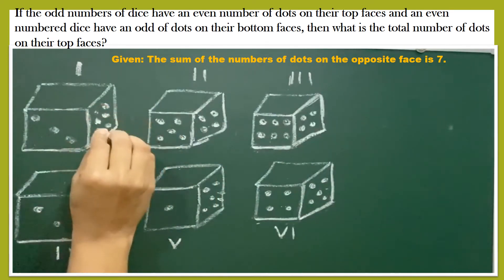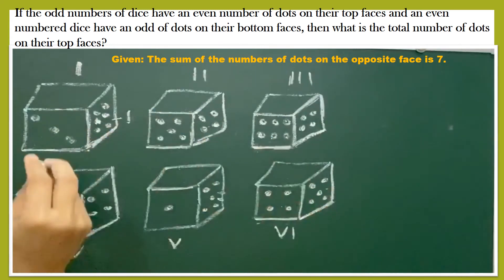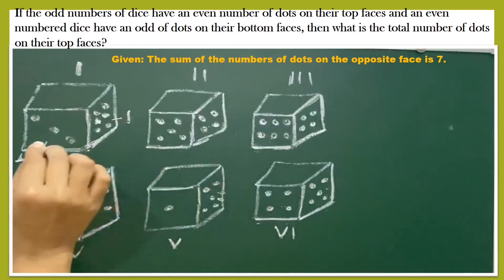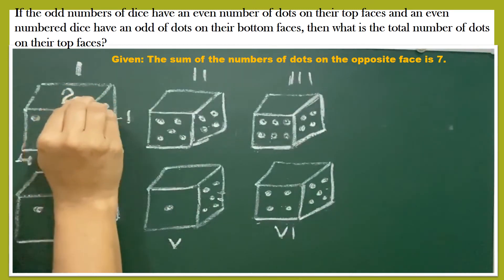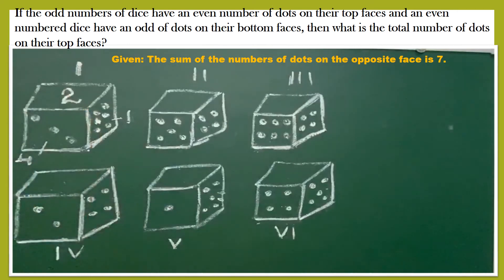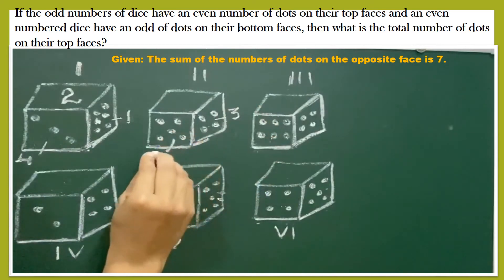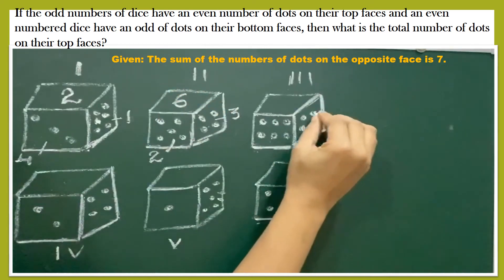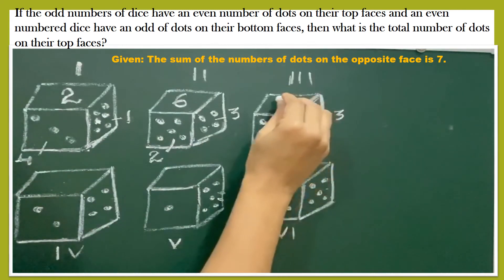For die 1: this face has 6 dots, opposite is 1. And 3, opposite is 4. The remaining numbers are 2 and 5; the even number is 2. So this cube has 2 dots on top. For die 2: 4's opposite is 3, 5's opposite is 2, remaining is 1 and 6; even number is 6. For die 3: 4's opposite is 3, 6's opposite is 1, remaining is 2 and 5; even number is 2. For die 4: 2's opposite is 5, 4's opposite is 3, remaining is 1 and 6; even number is 6.